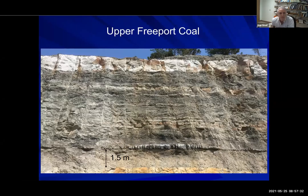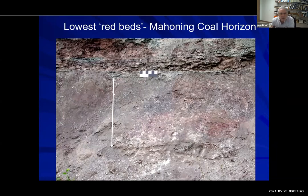Walking through the section: this is the Upper Freeport Coal and a Burdick Glade paleosol beneath it, with flood basin deposits above. This is the lowest red bed interval — about 15 meters above the Upper Freeport and about 15 meters below the Brush Creek Coal. It is a red vertisol but does not have caliche.